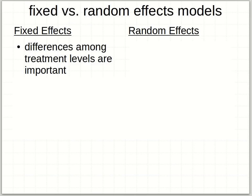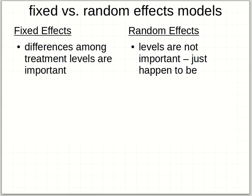Fixed versus random effects models — I'll try to contrast them in a simple way. A fixed effect is one where the treatment levels — low, medium, high — are important. You want to know about the difference caused between low and medium treatments, or medium and high. On the other hand, a random effect is one where you're not really worried about the different levels. They just happen to be there, and you need to account for those differences in your analysis because they contribute to the variation. If you can say this chunk of the variation is due to random effects, you're better able to see the remaining variation that's due to your fixed effects.